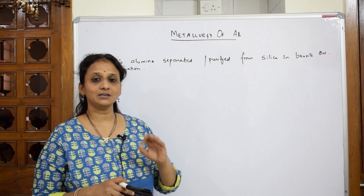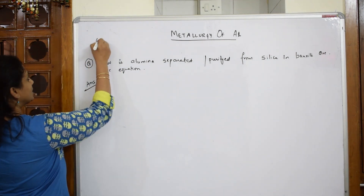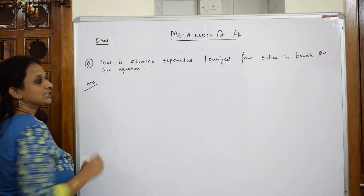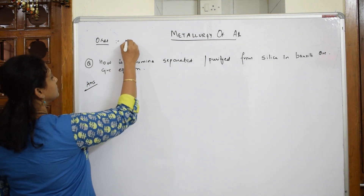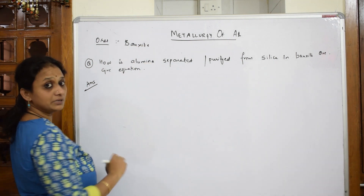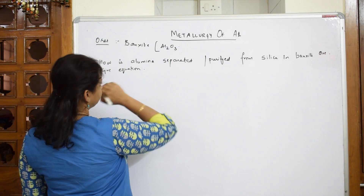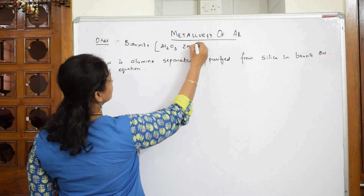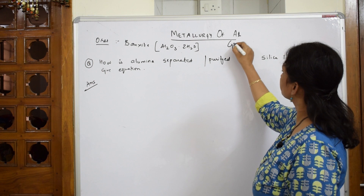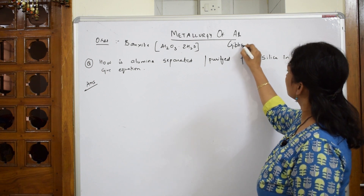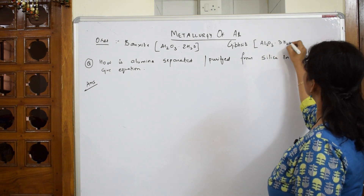The most important thing to remember when studying metallurgy of aluminium is to first mention the ores of aluminium. Aluminium exists in two different forms: one is bauxite and one is gibbsite. The formula for bauxite is Al₂O₃·2H₂O, and gibbsite is Al₂O₃·3H₂O.